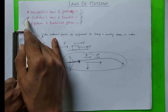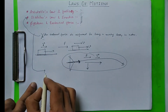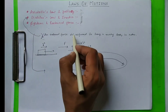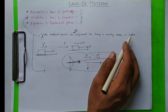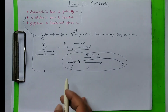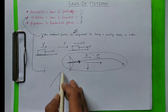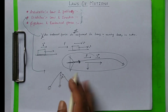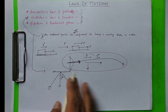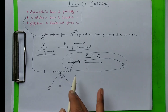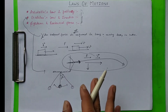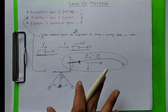Aristotle's law was corrected by Galileo. Galileo gave the law of inertia and told that an external force is not required to keep a moving body in motion. For example, take a pendulum: if there is no air resistance, the bob will continuously move between both extreme positions and keep moving. This is the law of inertia.